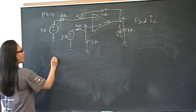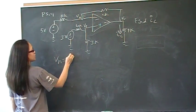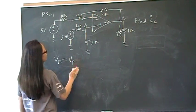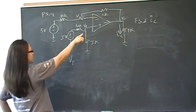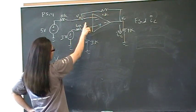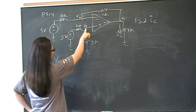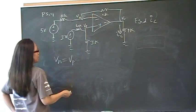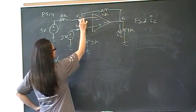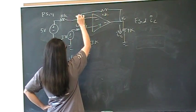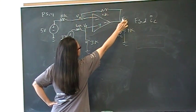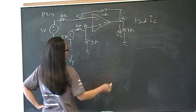Remember that in an op amp the voltage at the negative terminal is equal to the voltage at the positive terminal. In this case, it's not zero — it's not just connected to ground — so it equals something we need to find. We need that in order to do the node voltage equation and solve for Vout, because Vout over 4k will give us IL.